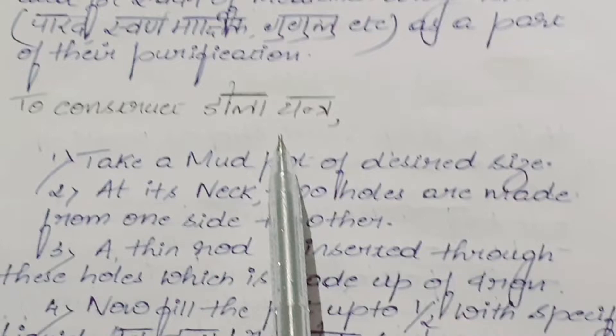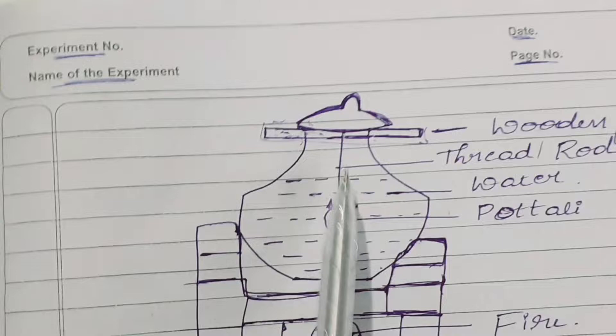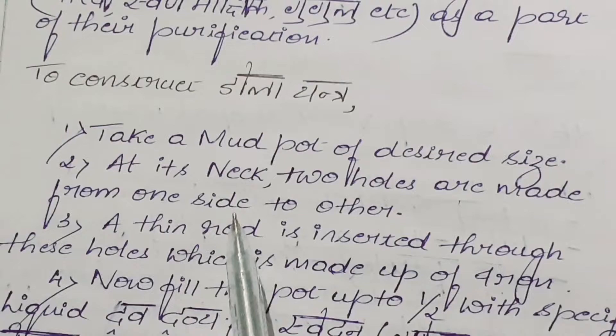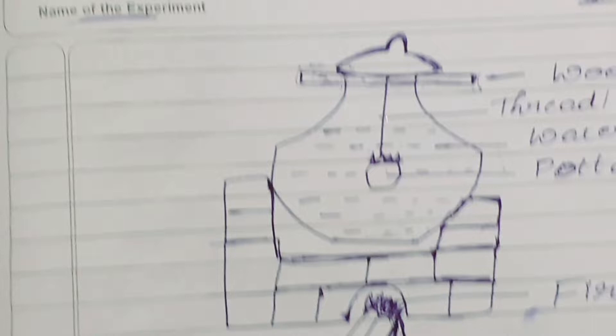To construct Dola Yantra, we take a mud pot of desired size. At its neck, two holes are made from one side to the other. Here you can see a hole is being made from one side to the other.